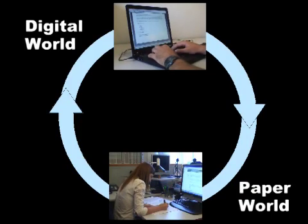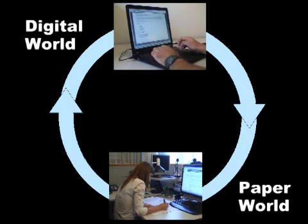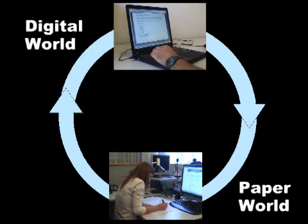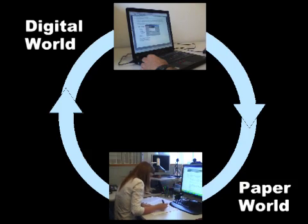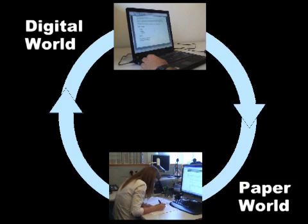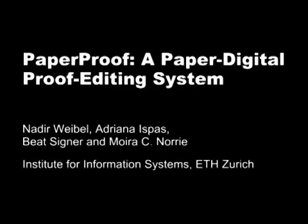We have presented PaperProof, an application using handwritten gesture-based commands to ensure a document's seamless transition between physical and digital representations. Learning the gestures requires a small amount of training, which makes our gesture-driven interface easy and natural to use. PaperProof is based on a novel approach for capturing the structural model of a digital document during the printing process to maintain a logical bi-directional mapping between the digital and paper instances.